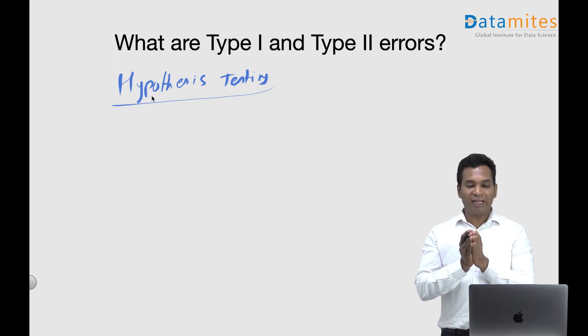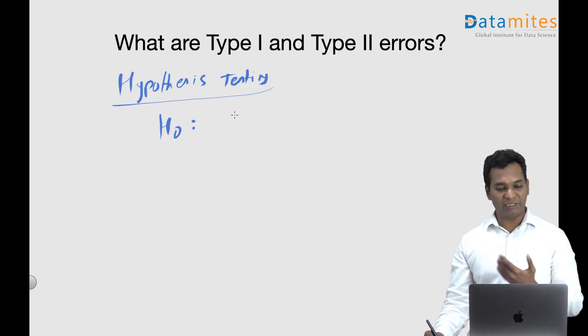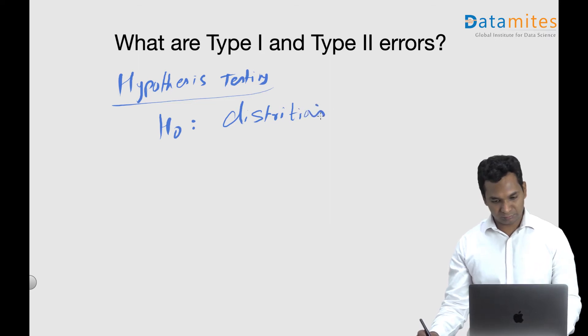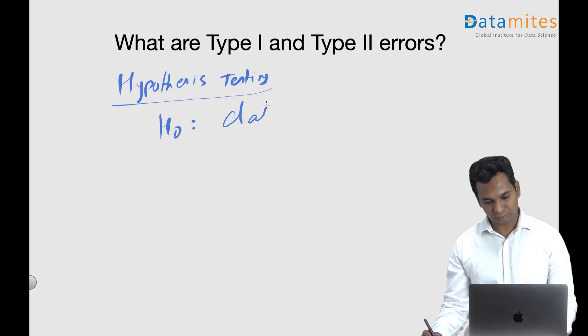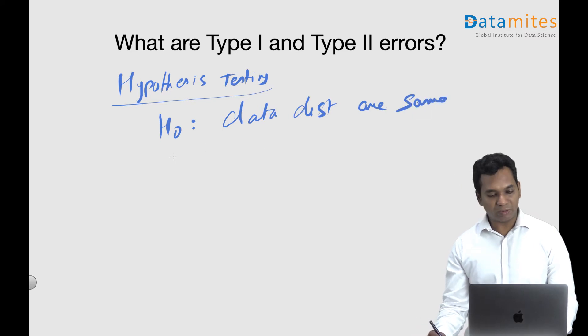Null hypothesis essentially always equates the distribution, so null hypothesis says the distributions or data distributions are same. And the alternate hypothesis says they are not same.